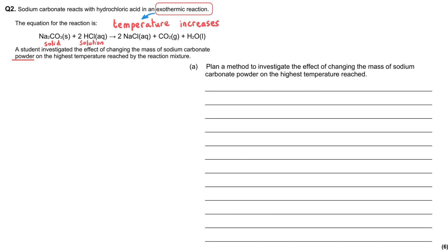A student investigated the effect of changing the mass of sodium carbonate powder — again, we're told it's a solid — on the highest temperature reached by the reaction mixture. The question asks us to plan a method to investigate this effect. Questions like this will always have a banded mark scheme, and we want to aim for a level three answer, which means five or six marks out of six.